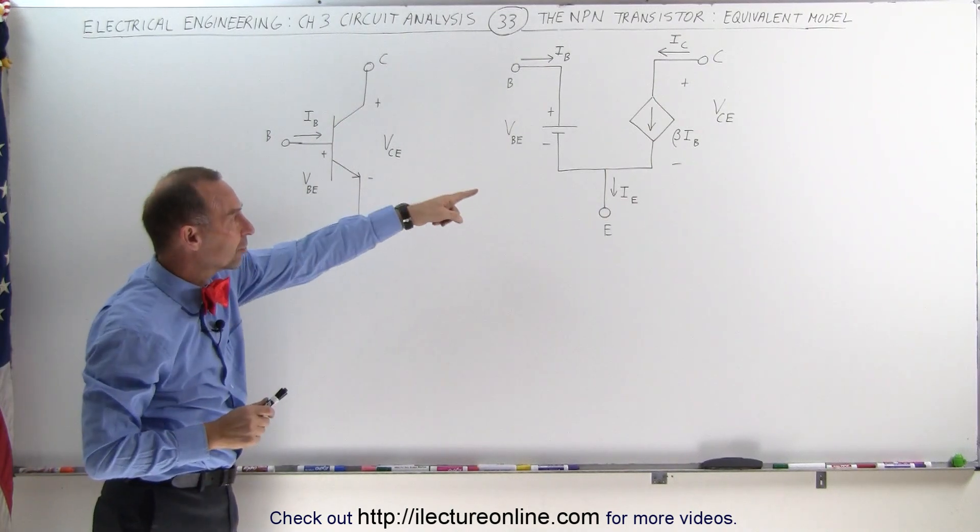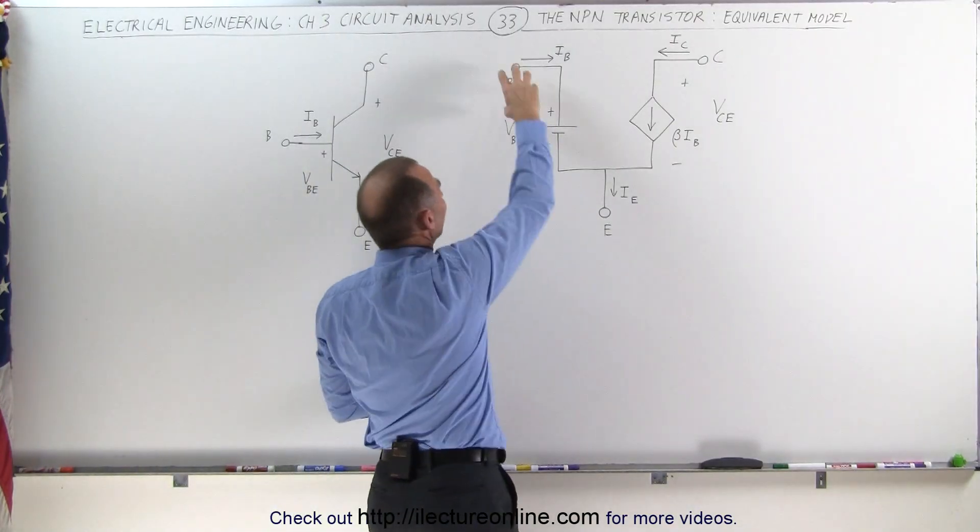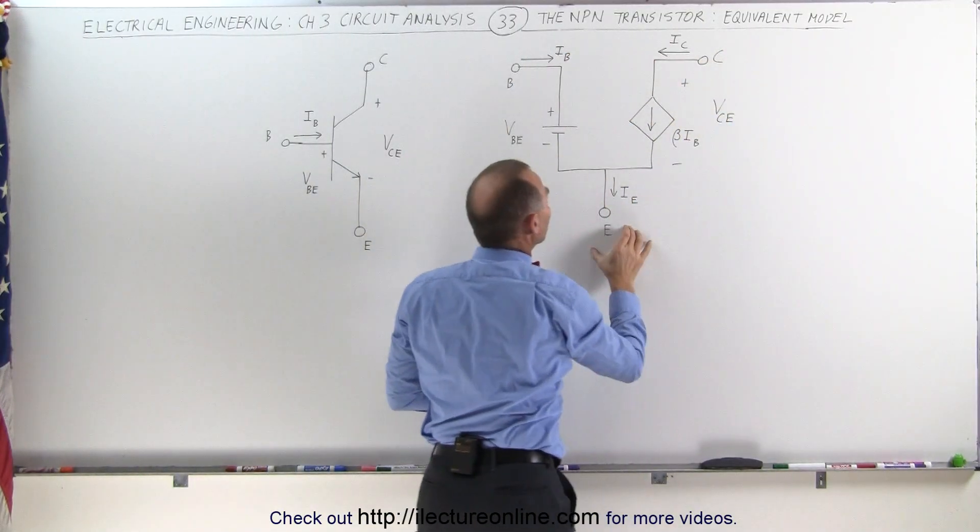But if we write the schematics in this form, notice what it then becomes. We still have a base, we still have a collector, and we still have an emitter.